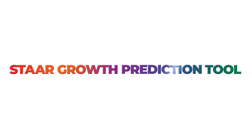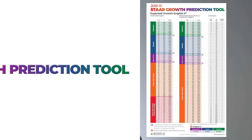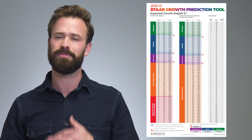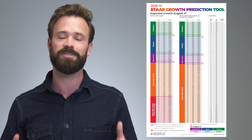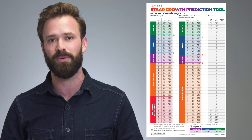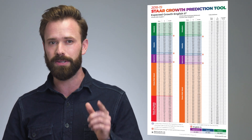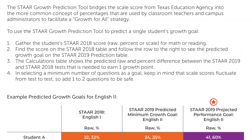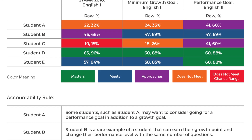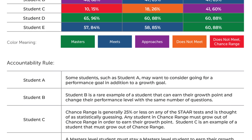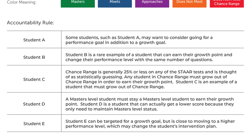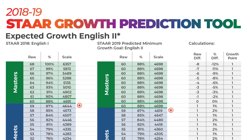The tool is a simple one-pager that can quickly predict what it would take for any student to earn a growth point of one. Included with the tool are five sample student scenarios that you might encounter. Let me show you how it works with a sample student.